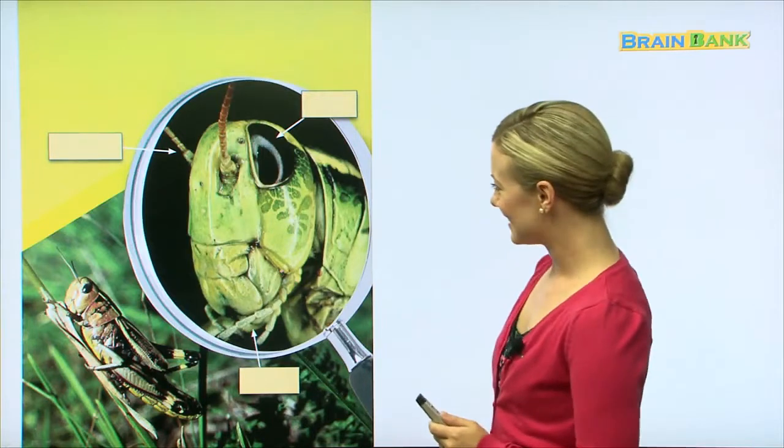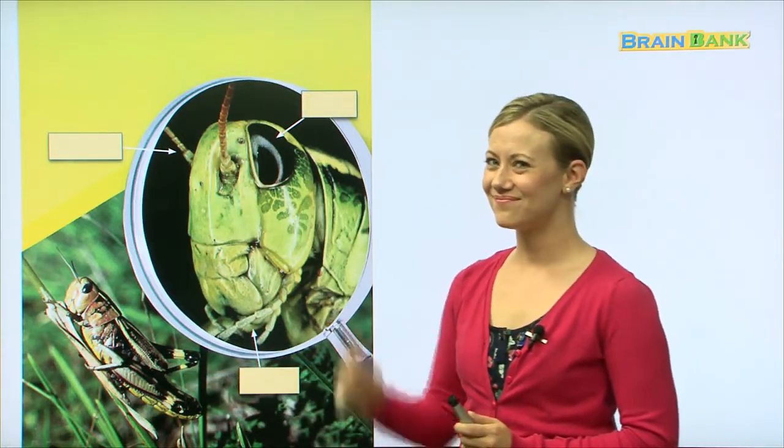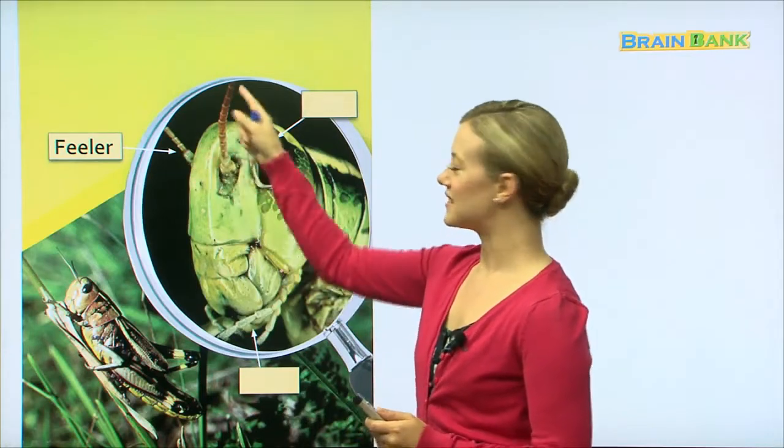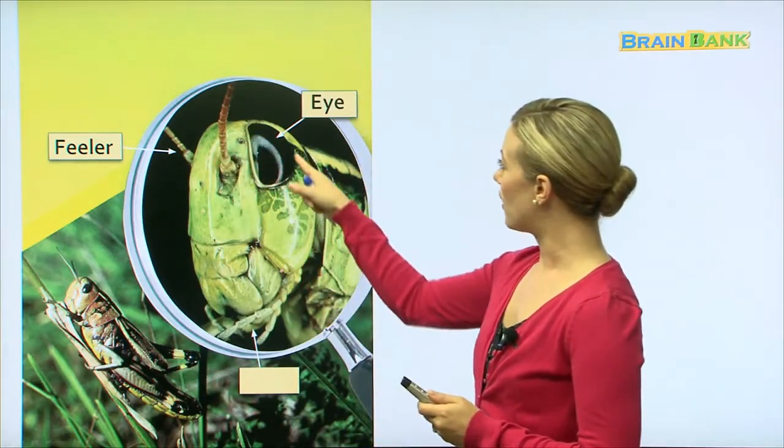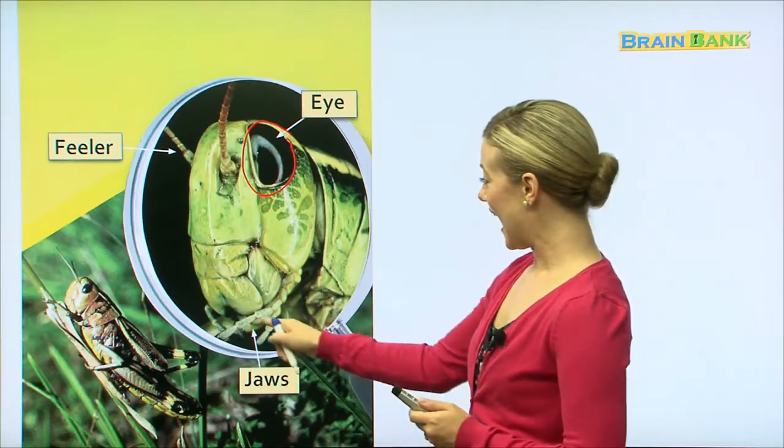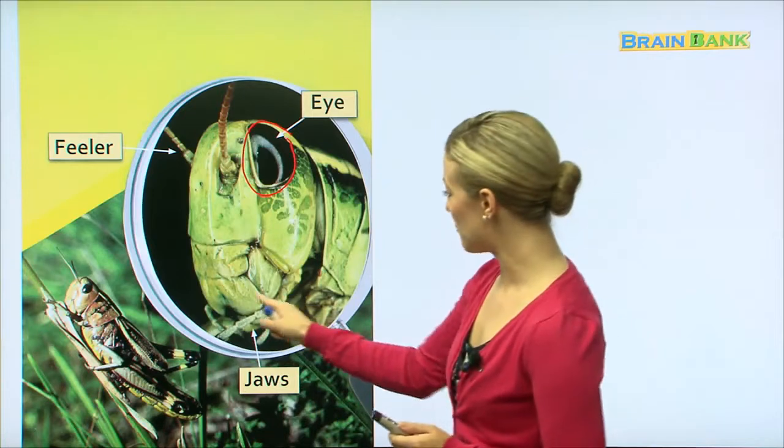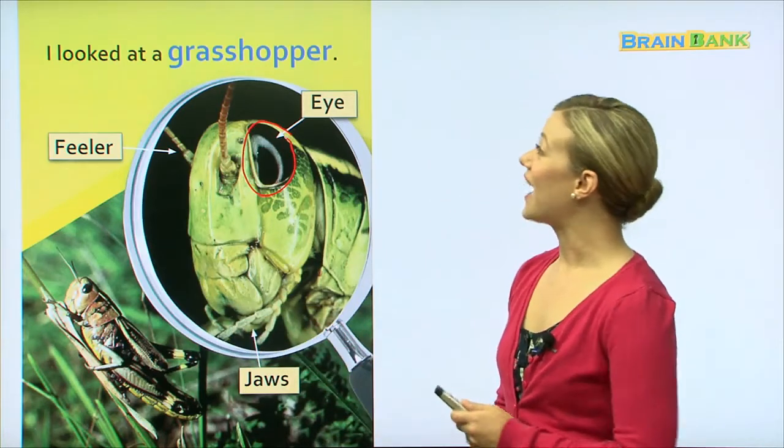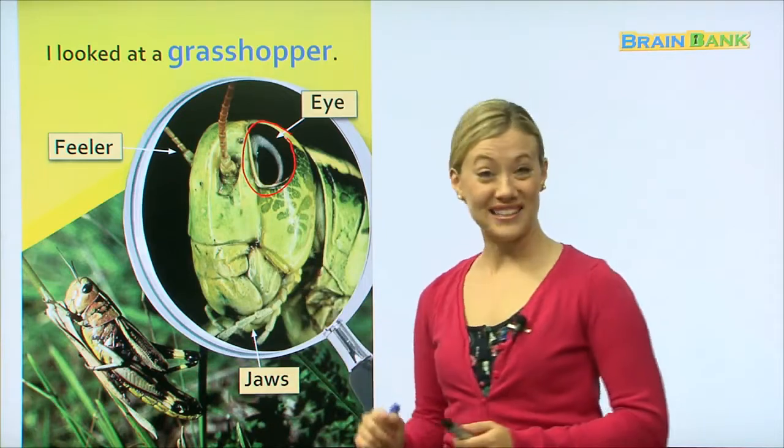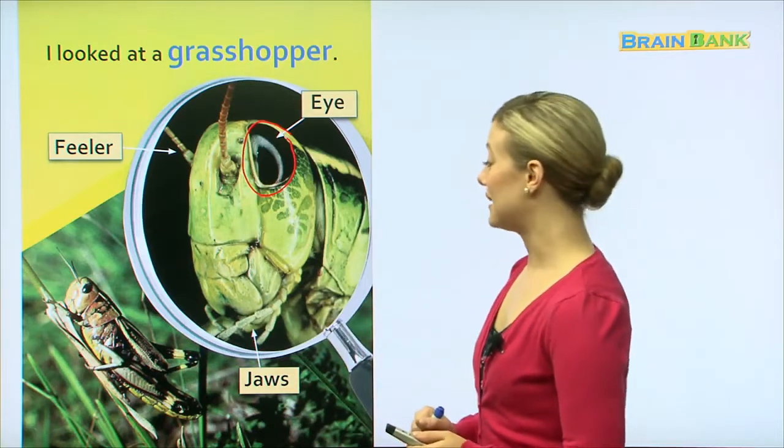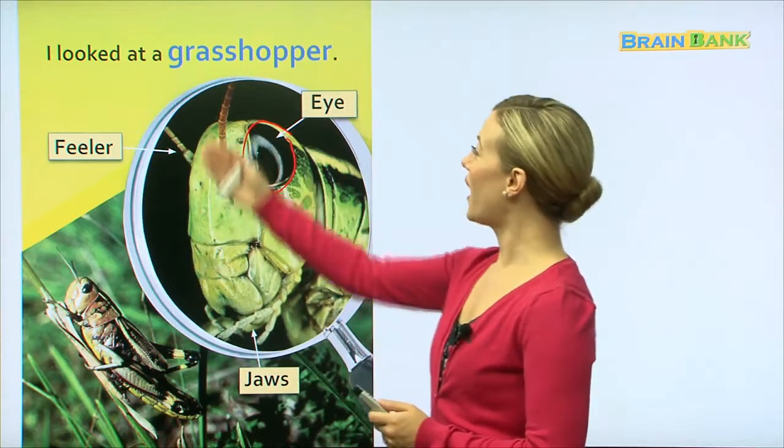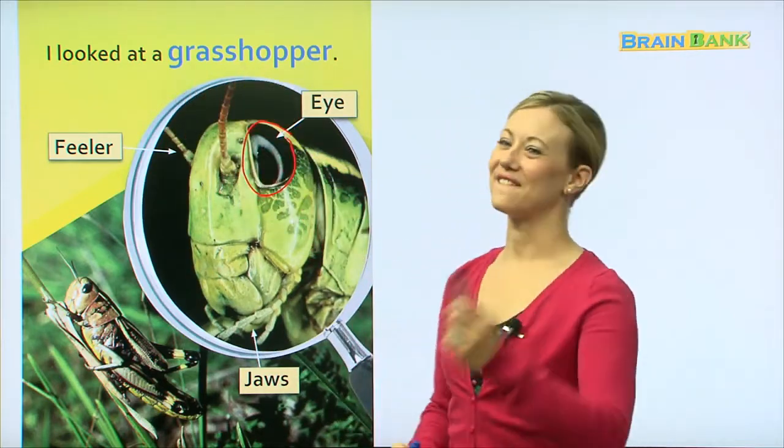Okay, here we have another insect. Hmm, does anyone know what insect that is? I think I know, but let's see if you can guess. Feelers. So these things that are coming out of his head are feelers. That big black thing, this is the eye. He's looking at us. And jaws. So this one has another mouth down here. I looked at a grasshopper. Ah, this is a grasshopper. Have you ever seen a grasshopper look like that? Me neither. But this is what it looks like through the magnifying glass. So let's say it all together, shall we? I looked at a grasshopper. Very good.